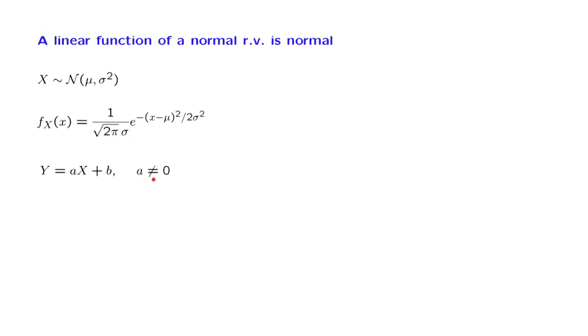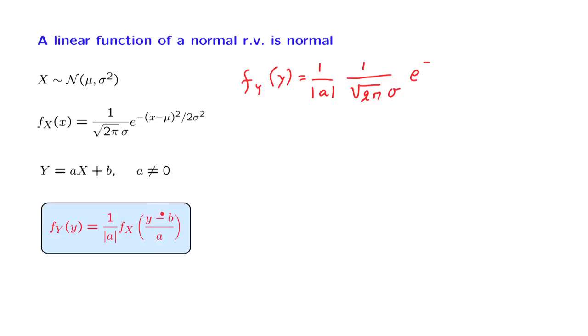We will just use the formula that we have already developed. So the density of y is equal to 1 over the absolute value of a. And then we have the density of x, but evaluated at x equal to this expression. So this expression will go in the place of x in this formula. And we have y minus b over a minus mu squared divided by 2 sigma squared.